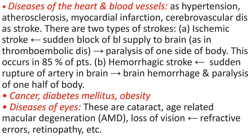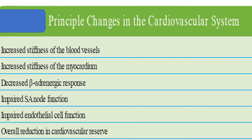Diseases of the heart and blood vessels include hypertension, atherosclerosis, myocardial infarction, and cerebral vascular disease. There are two types of stroke: ischemic stroke and hemorrhagic stroke. Principal changes in the cardiovascular system in the elderly include increased stiffness of blood vessels, increased stiffness of myocardium, decreased beta-adrenergic response, impaired SA node function, impaired endothelial cell function, and overall reduction in cardiovascular reserve.